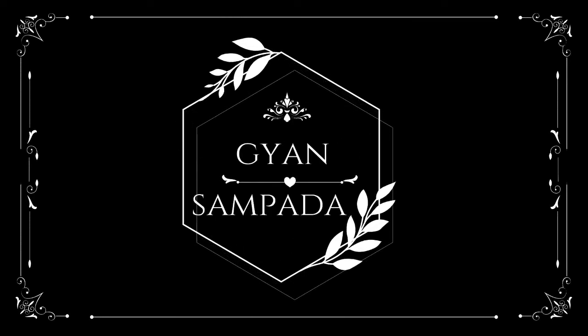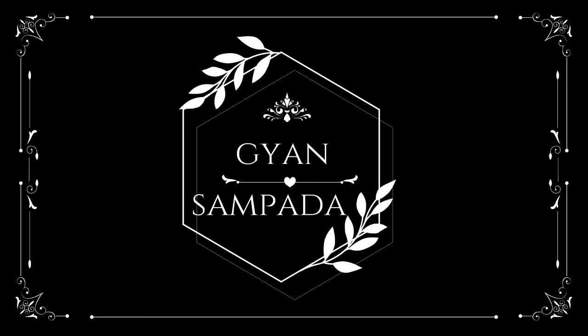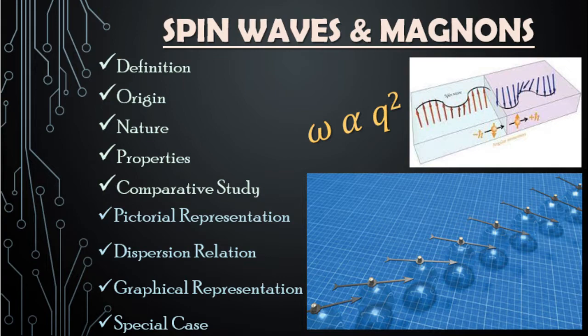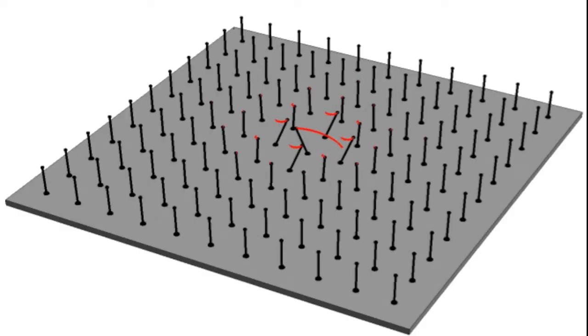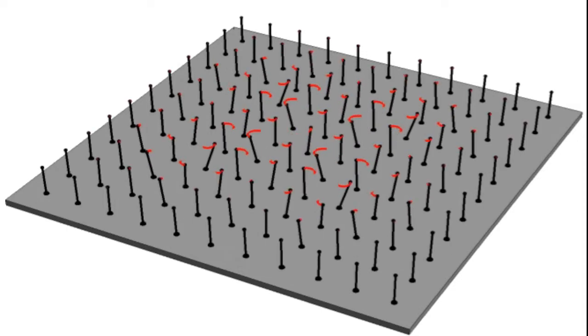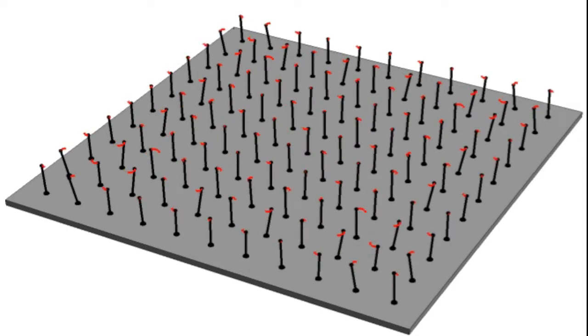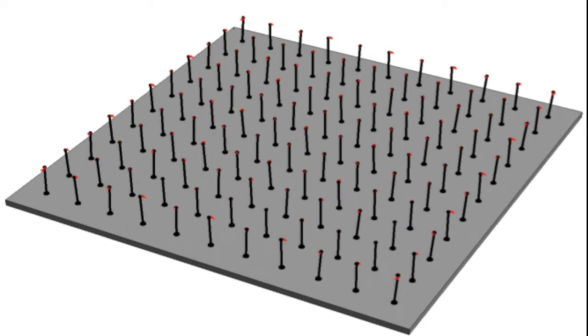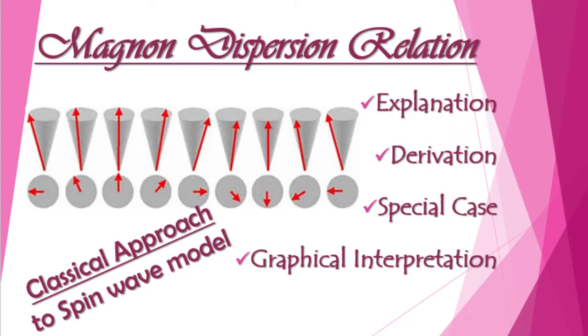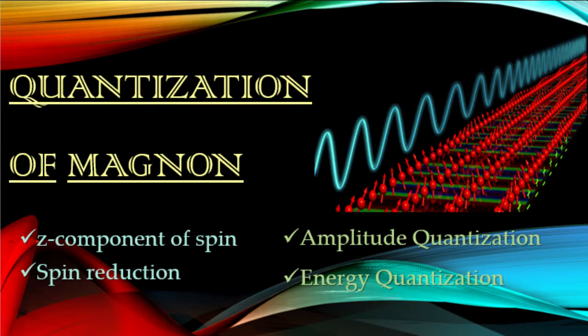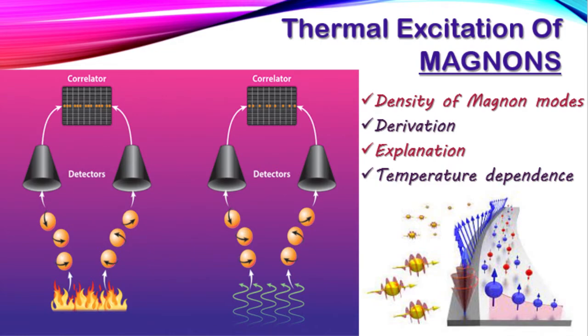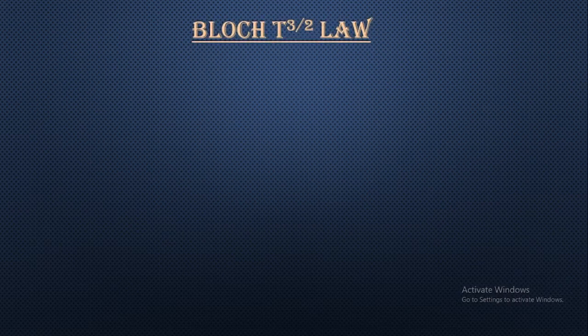Hello everyone and welcome back to my channel Gyan Sampata. In our previous classes we were discussing about ferromagnetism, especially stressing on the spin wave theory, which is no doubt the best worked out theory of ferromagnetism. Under the spin wave theory, we derived the dispersion relation for magnons, quantization of spin waves, and in the last class we dealt with the density of states under thermal excitation of magnons.